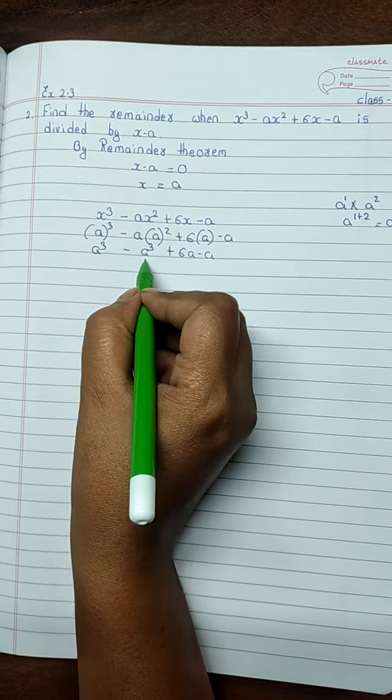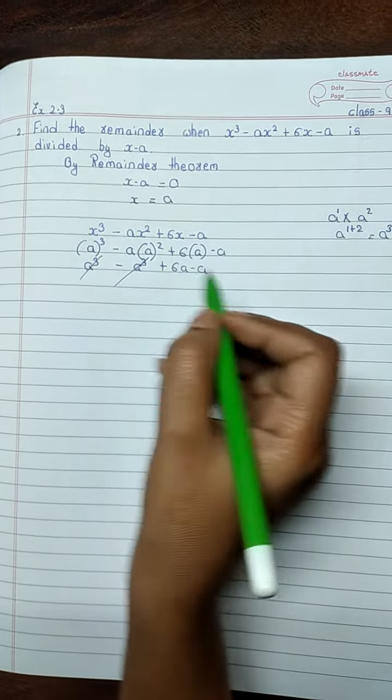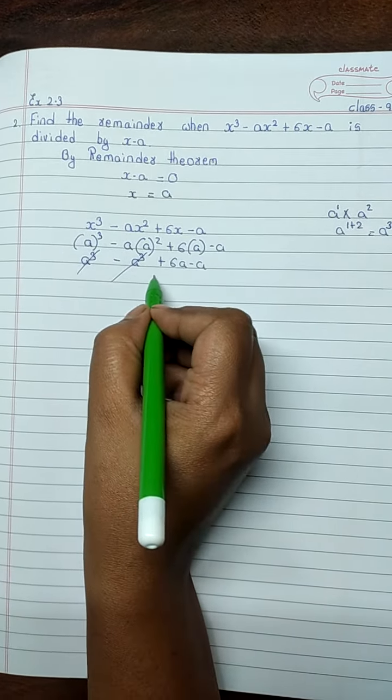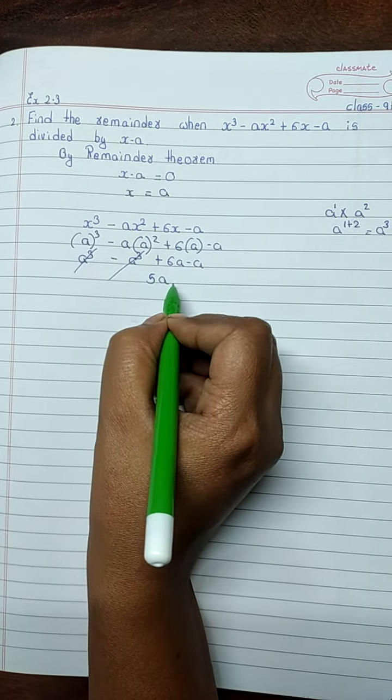This is positive, this is negative. It will get cancelled. 6a minus a is 5a. So, the answer is 5a.